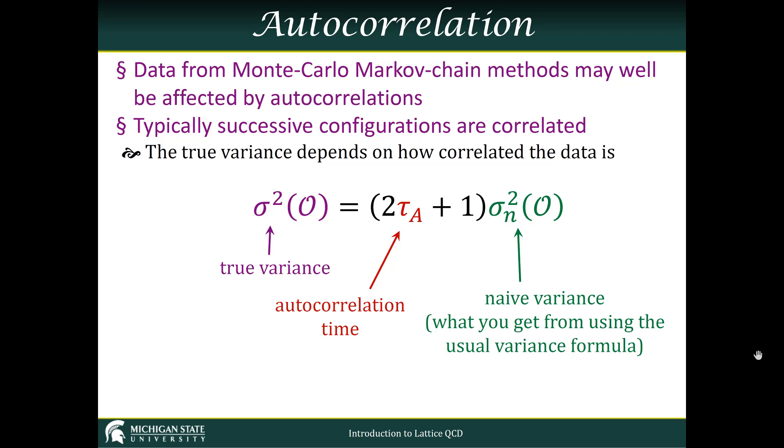The measure we have to determine how related two of these things are is the autocorrelation—the relationship of a quantity with itself, but at a different Monte Carlo time.